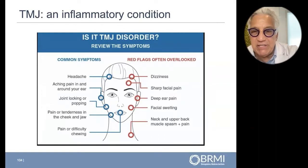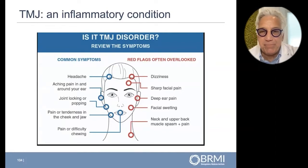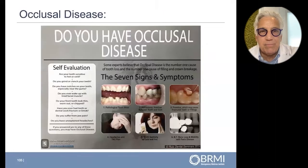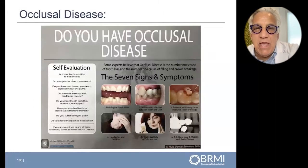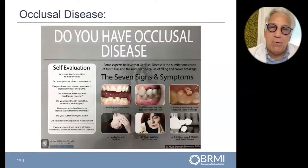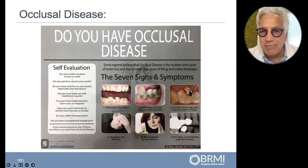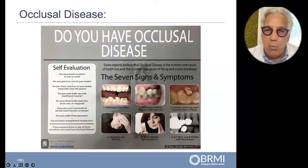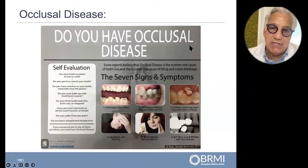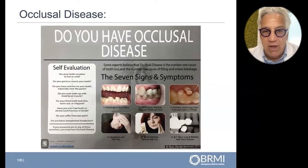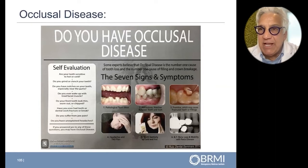Common symptoms include headache, jaw popping, pain or difficulty chewing, but there is also deep ear pain, sharp facial pain, dizziness, and neck and upper back muscle spasm. Looking at occlusal disease — are you breaking teeth, clenching and grinding? Are your teeth wearing and chipping all over the place? This is called occlusal disease and it is not normal.